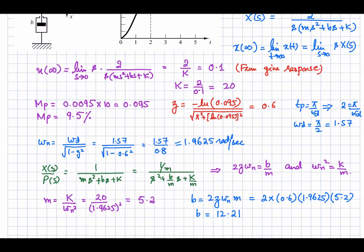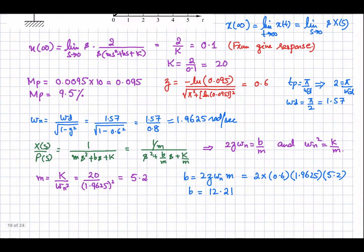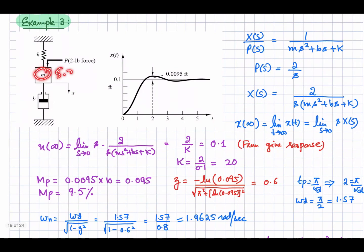Dividing all terms by M, we get 1/M divided by s² + (b/M)s + (k/M). Comparing with the standard second order form, b/M = 2ζωn and k/M = ωn². From these two expressions, M = K/ωn², which comes out to 5.2 kilograms. That is the mass required to produce this response.